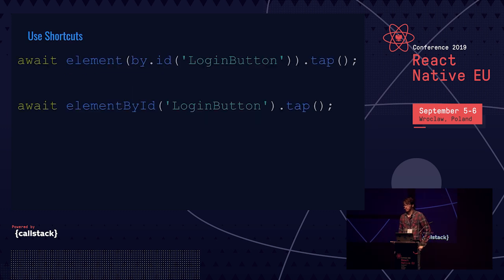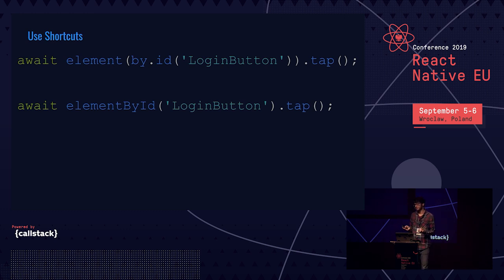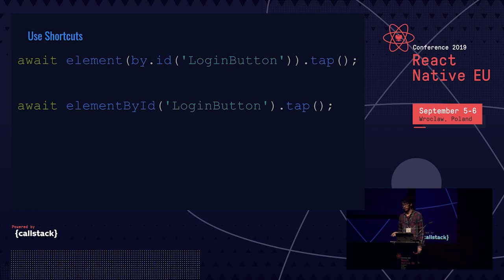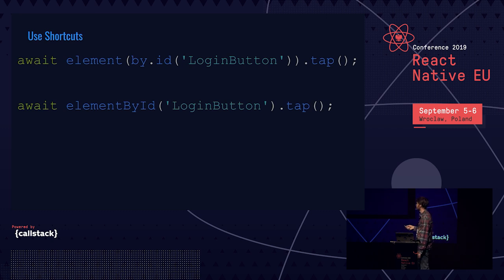You can also use shortcuts. Detox's complete API can sometimes be verbose, so you can save some typing and make it more readable. You can even create a helper function like tapById that will tap an element by its ID.